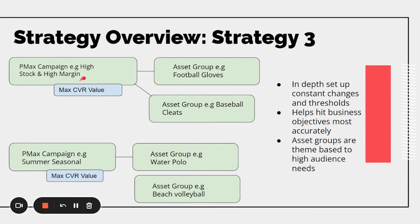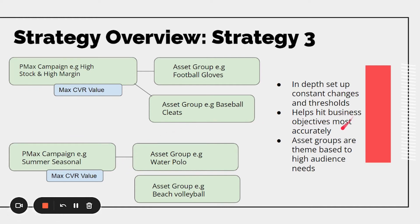The best strategy is number three: you have your Performance Max campaigns based off of your business margins and what's actually valuable to you. There are high-stock products with high margin, so you'd break out products not necessarily because they're the same, but because they have similar business value. For example, football gloves and baseball cleats might be different sports but have similar margins, so they go together — with an asset group specific to football gloves, and you can add up to a hundred in these categories. This aligns your business goals much more with the actual campaign. You can also run a seasonal campaign for a few weeks with a certain budget and promotions.